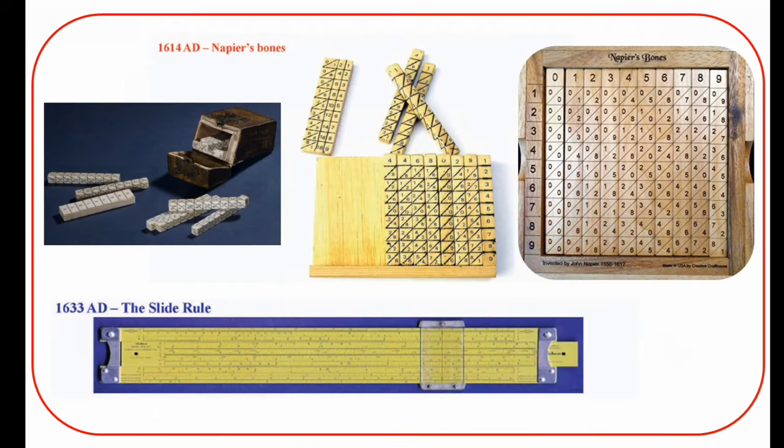Next is Napier's Bones. Napier's Bones was introduced in the 16th century. It is a manually operated calculating device created by John Napier from Scotland. It was initially made with bones, and that is how it got its name.